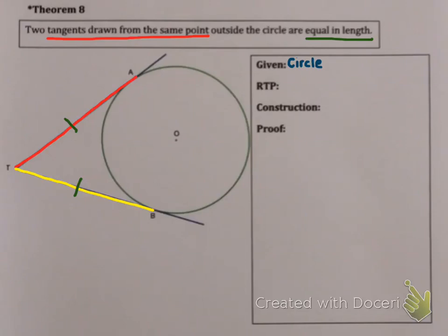So let's start. What are we given? We're given circle center O with tangents TA and TB. We're trying to prove that TA is the same length as TB.